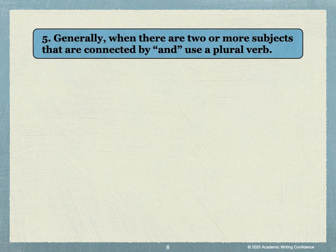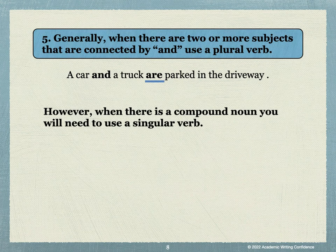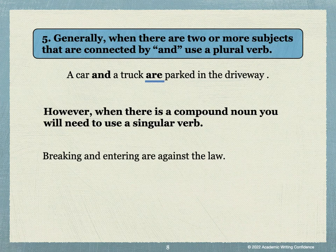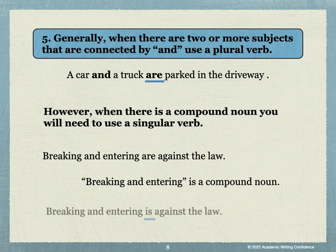Generally, when there are two or more subjects connected by and, we should use a plural verb. For example: A car and a truck are parked in the driveway. However, when there's a compound noun, you will need to use a singular verb. For example, breaking and entering is a compound noun, considered to be a single unit, so the correct sentence is: Breaking and entering is against the law.